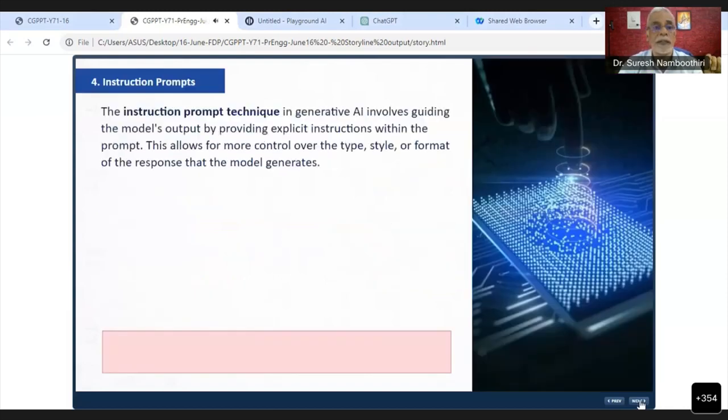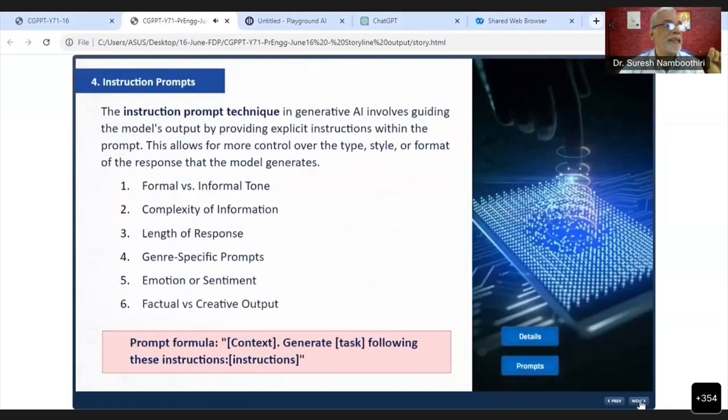This is the most fundamental prompt called the instruction prompt. As it says, the instruction prompt technique in generative AI involves guiding the model—when you hear 'model,' that's a technical word meaning ChatGPT.